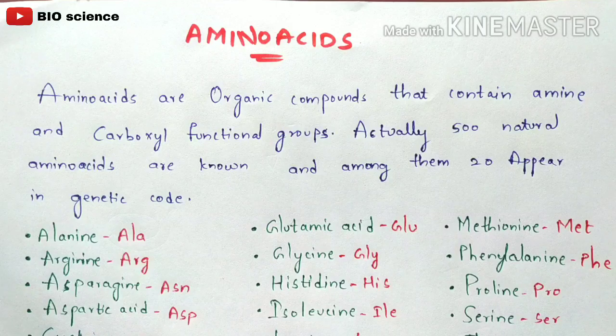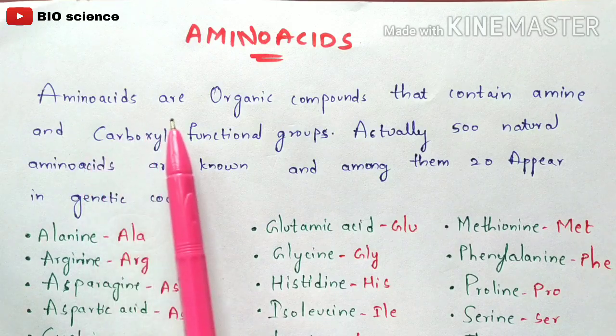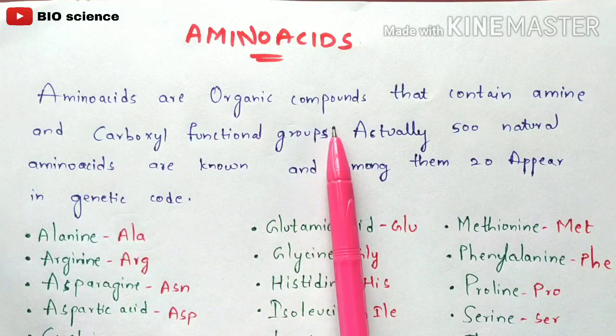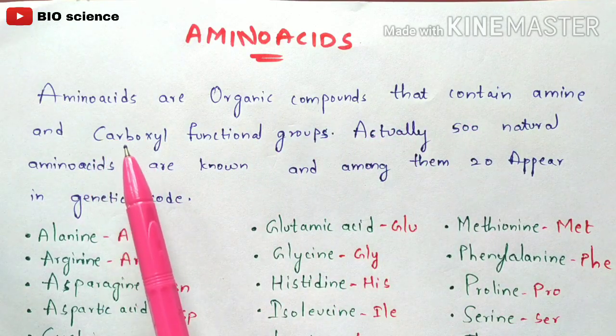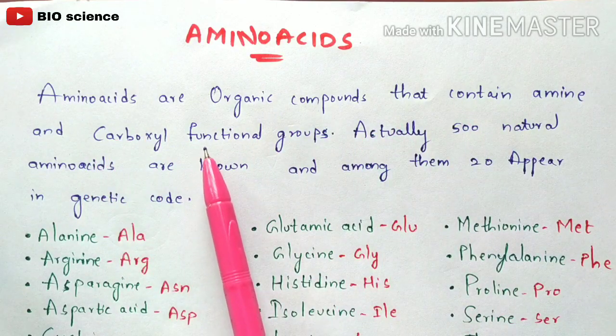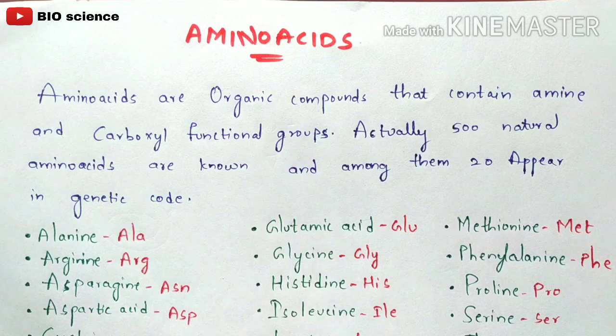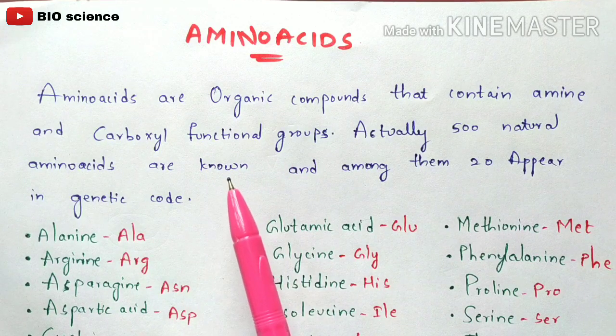So what are amino acids? Amino acids are the organic compounds that contain amine and carboxyl functional groups. So it contains an amino group as well as a carboxyl group.